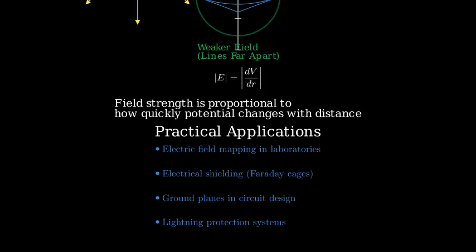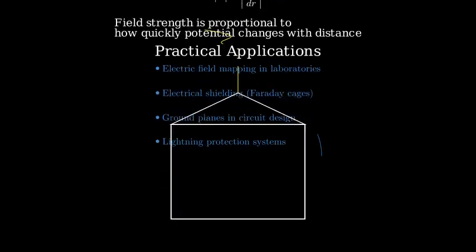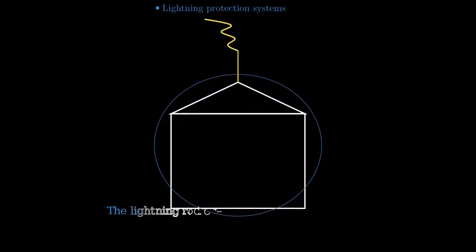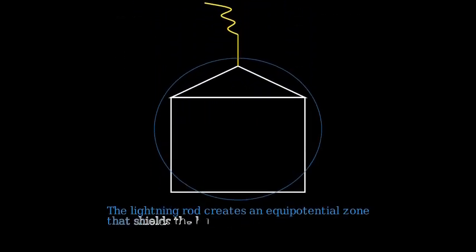In lightning protection systems, lightning rods and wires create equipotential zones. When lightning strikes a rod, the equipotential surface created protects the structure below.